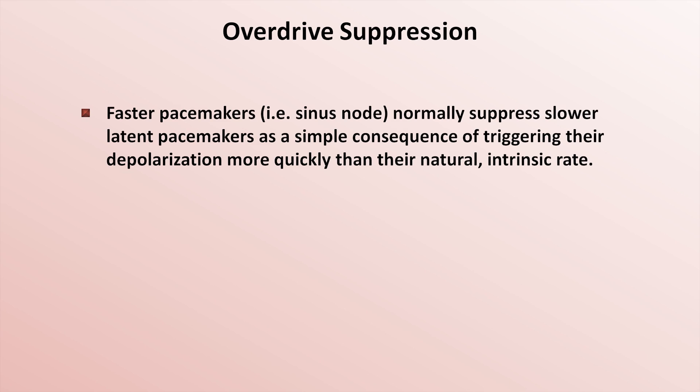First up is the simplest of these topics: overdrive suppression. You may recall that the heart is filled with latent pacemakers — tiny collections of cells which experience a slow, intrinsic, spontaneous depolarization, and which can take over the heart's native rhythm if faster pacemakers fail. Normally, these faster pacemakers, for example the sinus node, suppress the slower latent pacemakers as a simple consequence of triggering their depolarization more quickly than their natural intrinsic rate.